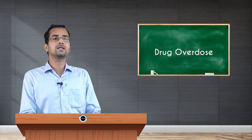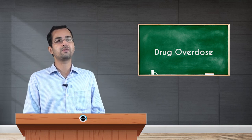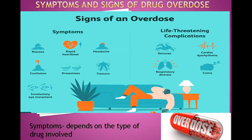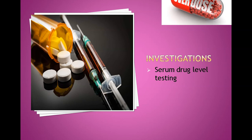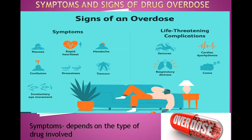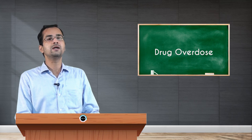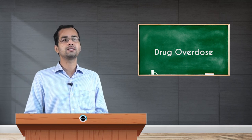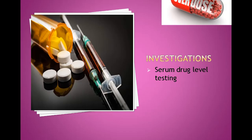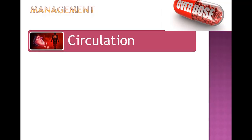The signs and symptoms of drug overdose depend upon the type of drug taken. To investigate a suspected case of drug overdose, the best approach is to measure the serum drug level, which specifically tells how much of the drug is in the blood. Other important investigations include renal function test and liver function test depending on the drug involved — for example, a nephrotoxic drug warrants a renal function test.